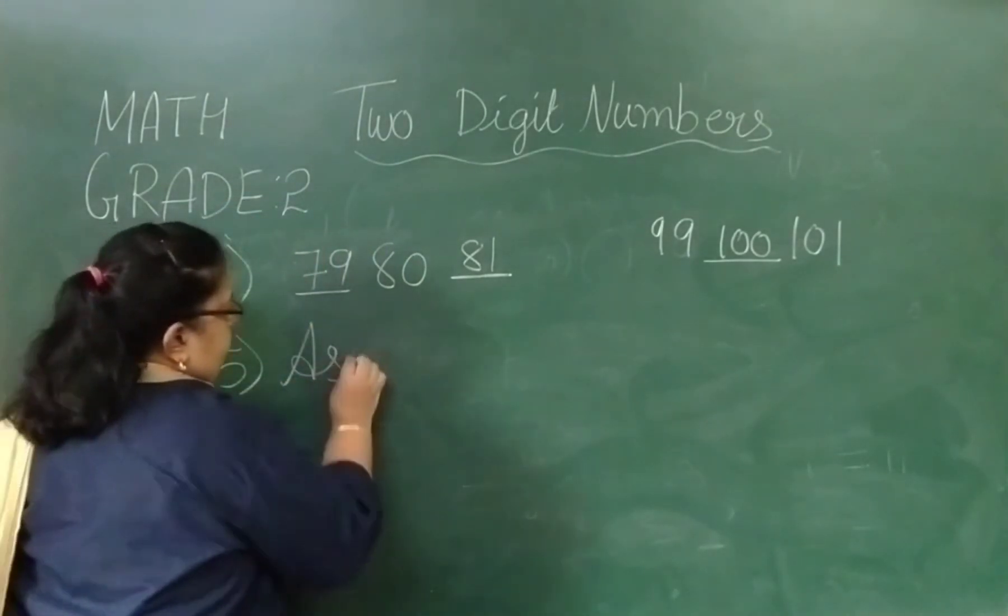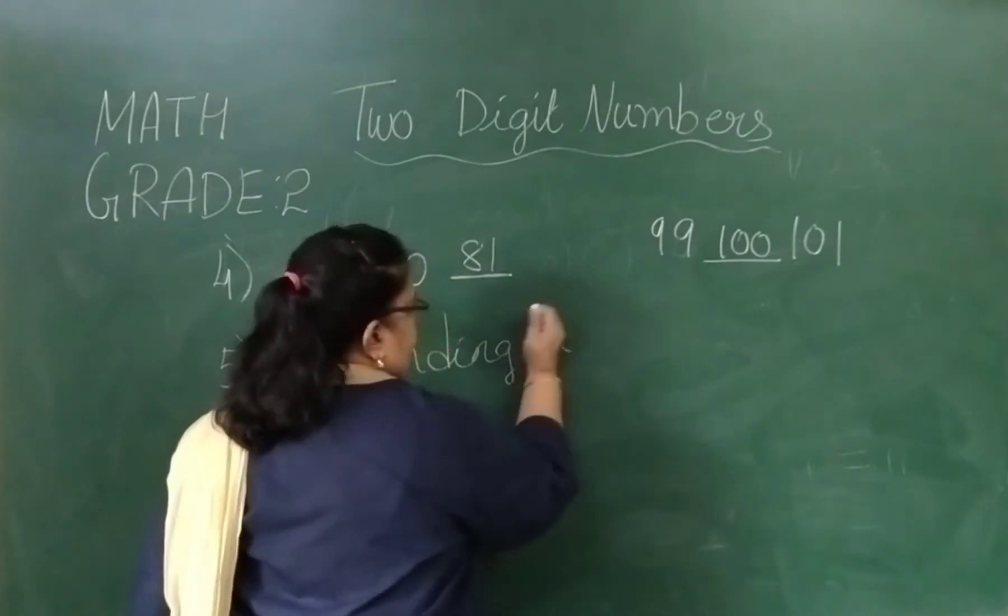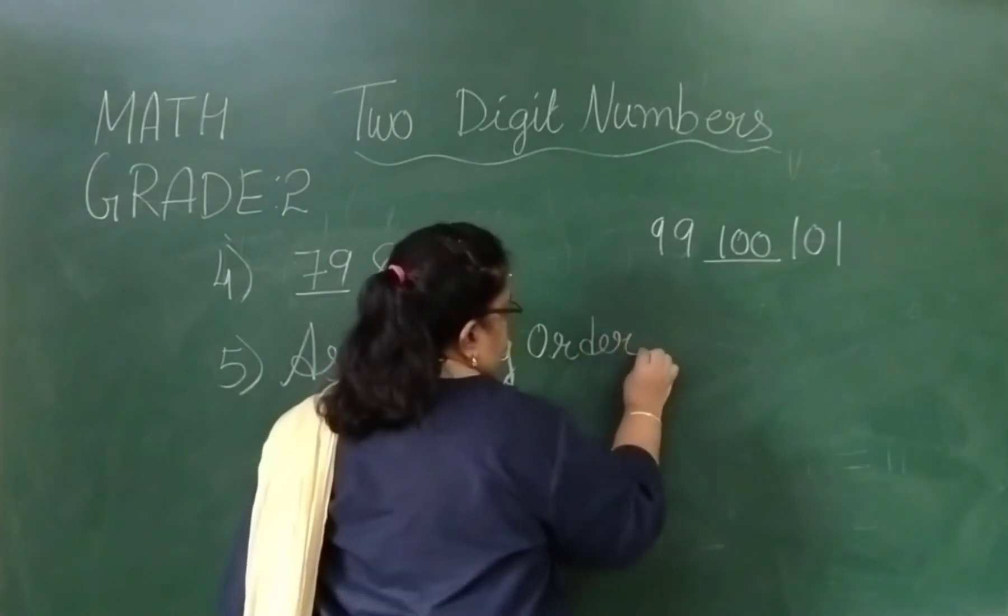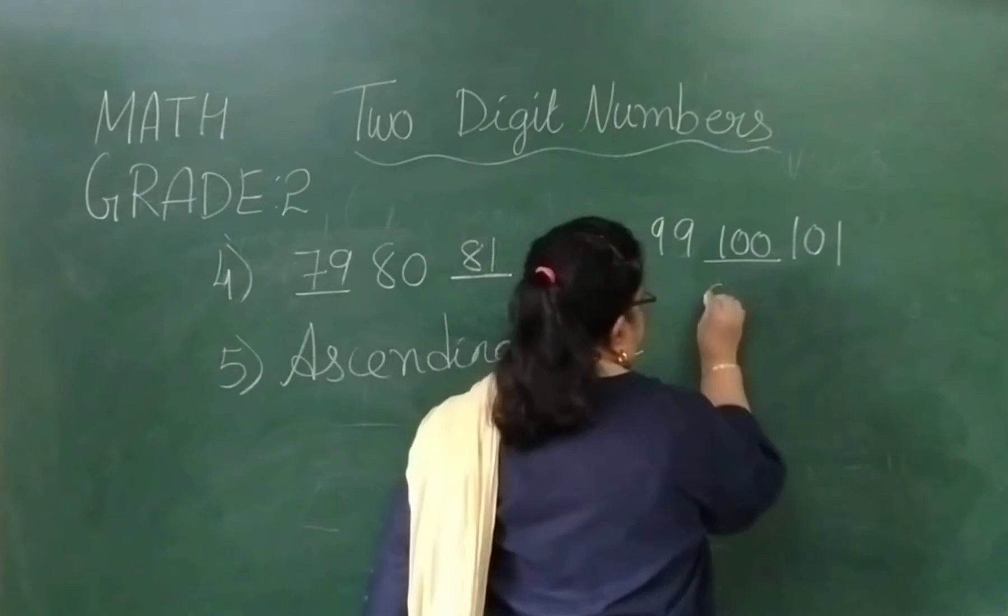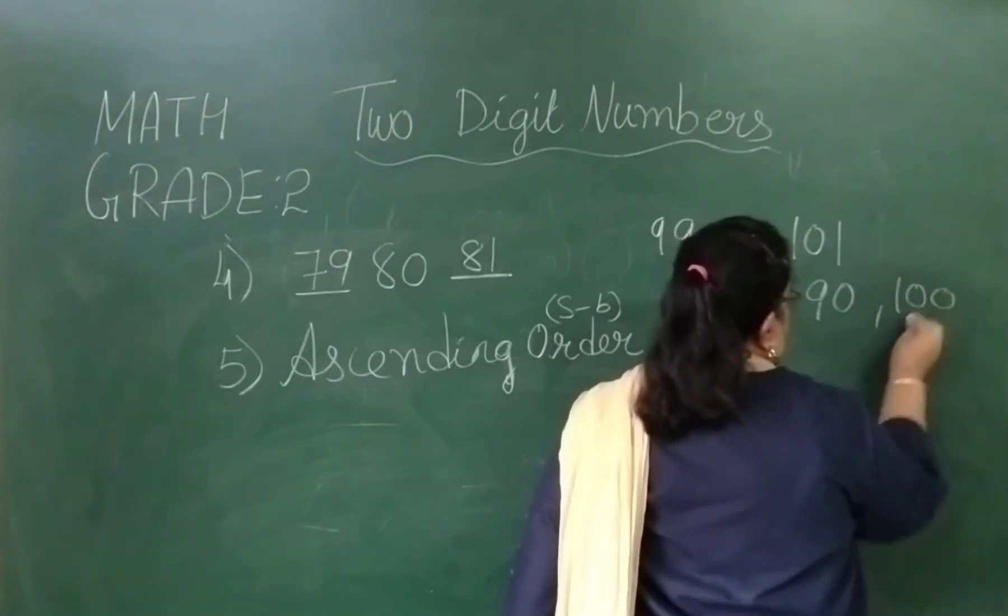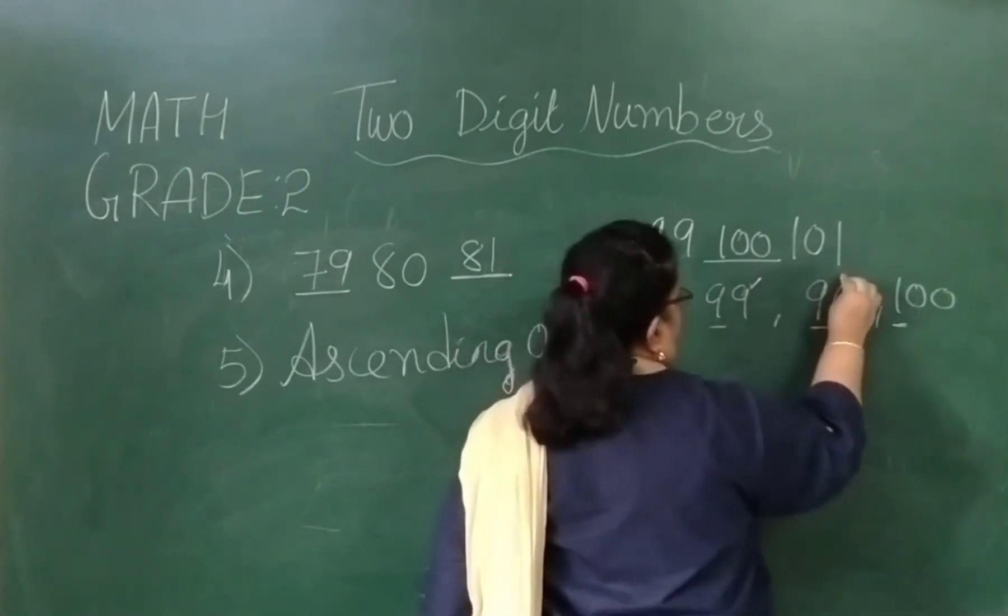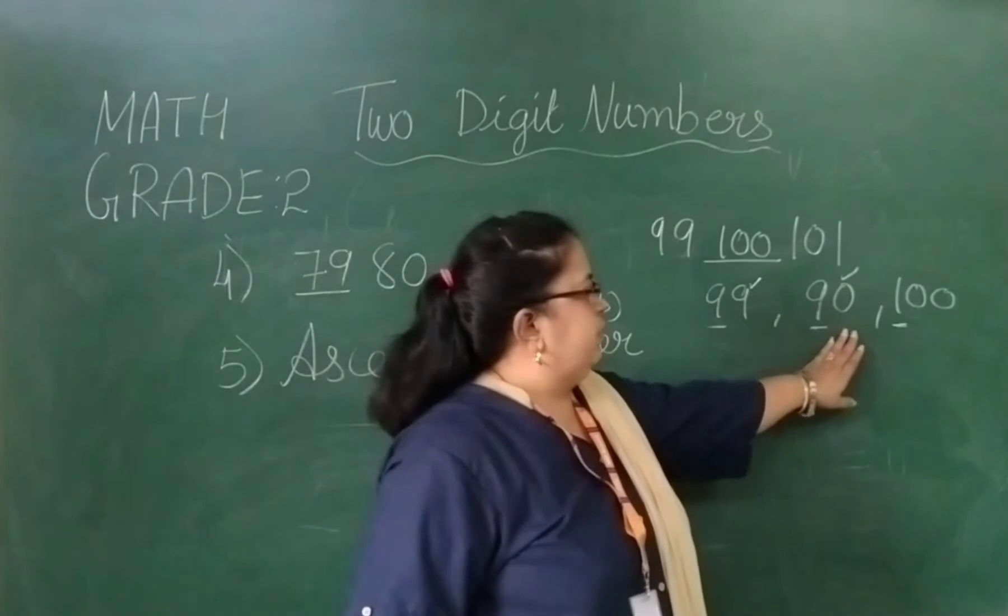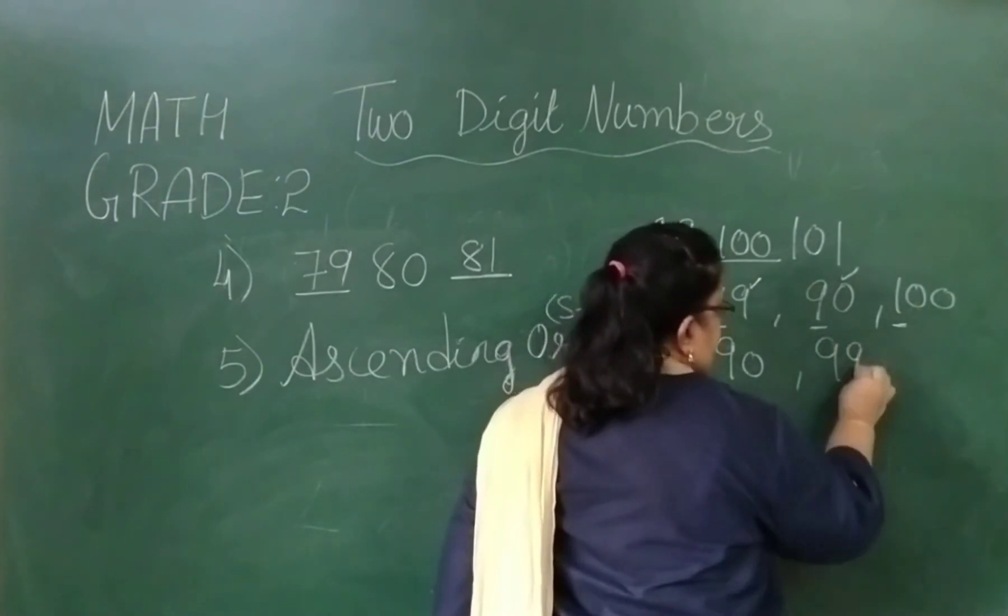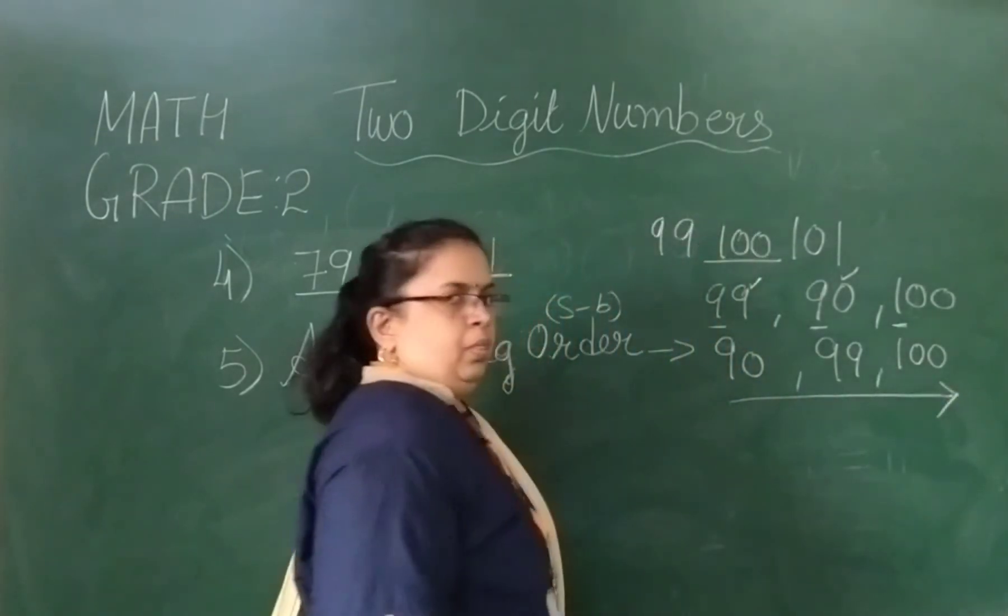Next one is ascending. Ascending means small to big. Ascending order, that is from small to big. These are the numbers given to you: 99, 90, and 100. Consider the first digit. In these two cases, the first digit is same, so consider the second one: 9 and 0. So 0 is the smallest. The first number would come, it is 90, then it comes 99, and then it comes 100, small to big.